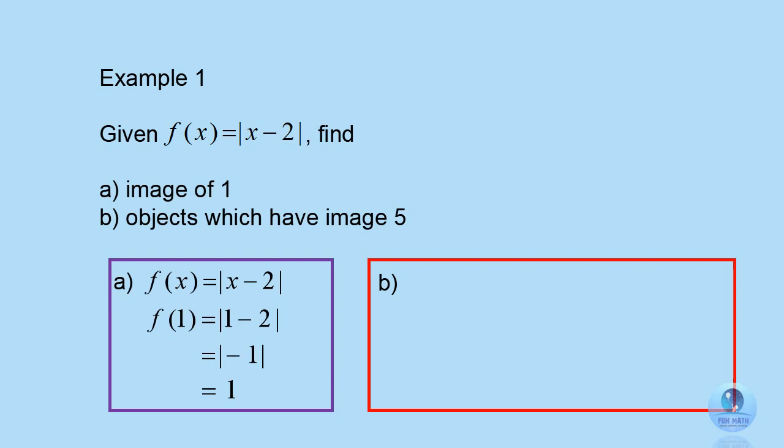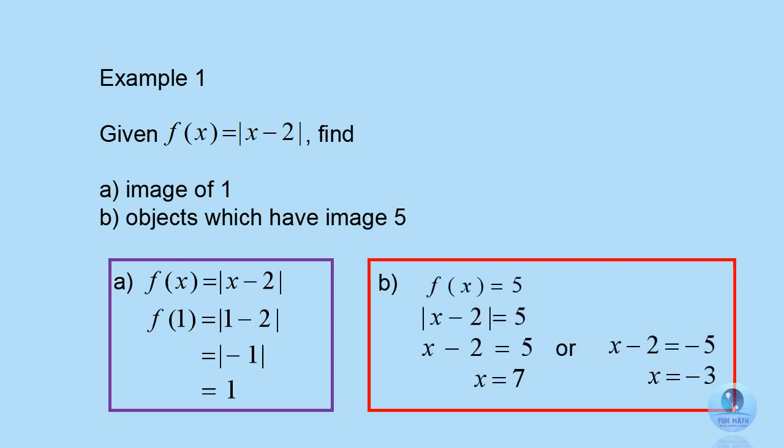To answer question b, you need to find the objects which have image 5. So 5 is your image, and f of x equals to 5. Modulus x minus 2 equals to 5. You need to understand the concept of modulus — in order to get the final answer 5, there are two possibilities: modulus 5 or modulus negative 5. So if you take out the modulus sign in an equation, your answer can be positive or negative. In this case, x minus 2 equals to 5 or negative 5, and you get the final answer x equals to 7 or negative 3.